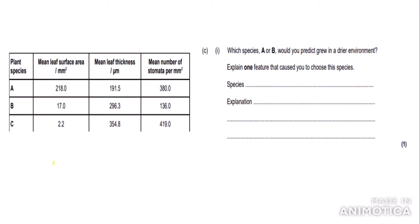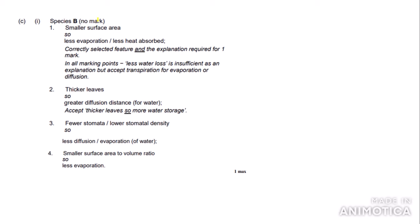The next part asks: which species, A or B, would you predict grew in a drier environment? The answer is species B because it has fewer stomata than species A — fewer stomata means fewer openings so less water is lost by evaporation. The mark scheme awards the mark for the explanation, not just naming the species. Acceptable answers include: smaller surface area so less evaporation; thicker leaves so greater diffusion distance so less water is lost; fewer stomata so less evaporation of water; or smaller surface area to volume ratio so less evaporation.